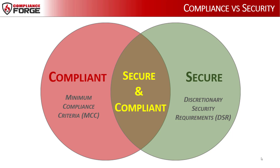Being compliant with a law, regulation, or framework does not necessarily make your organization's systems, applications, or services secure. On the other side of the coin, being secure does not necessarily mean that you are compliant with your obligations. Therefore, it is important to understand what controls you need to implement to achieve your optimal level of both being secure and compliant. This is where the DSP can help you define what it means to be both secure and compliant, with the idea of a minimum compliance criteria and also a set of discretionary security requirements.